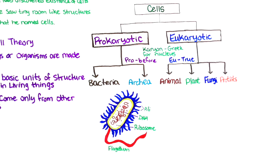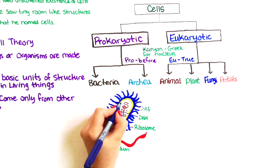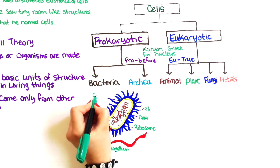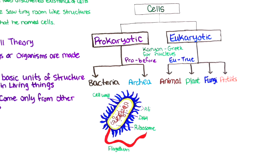Additionally, prokaryotes have a protective layer outside the cell called the cell wall. This cell wall is the target of lots of antibacterial drugs that we use to treat infectious diseases.